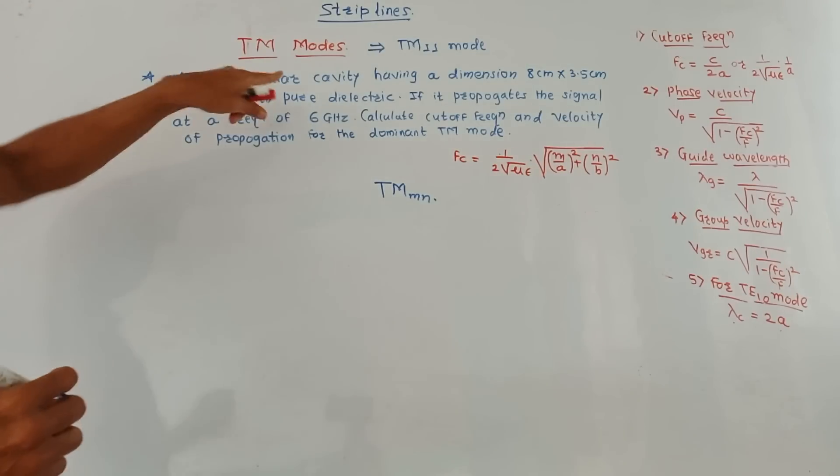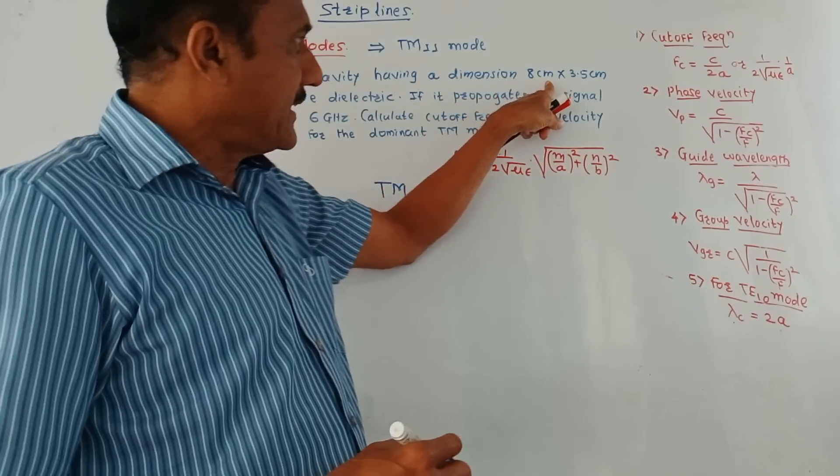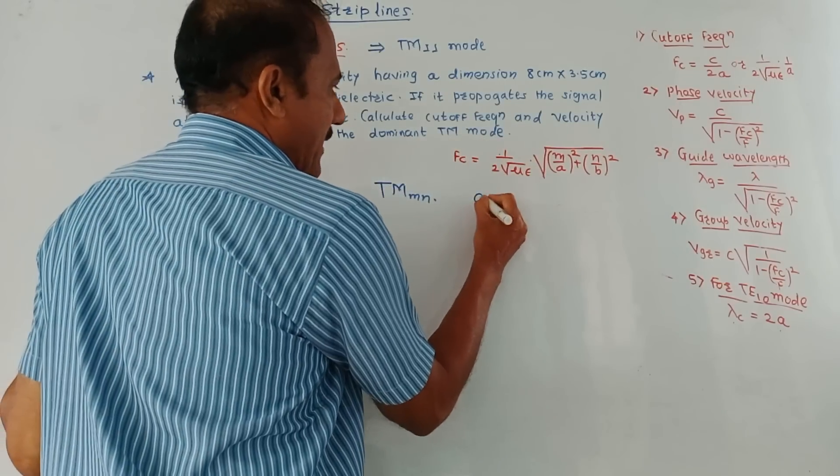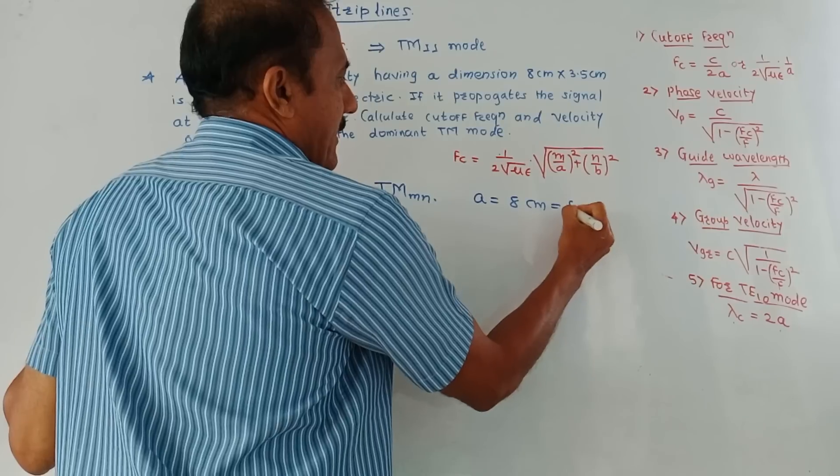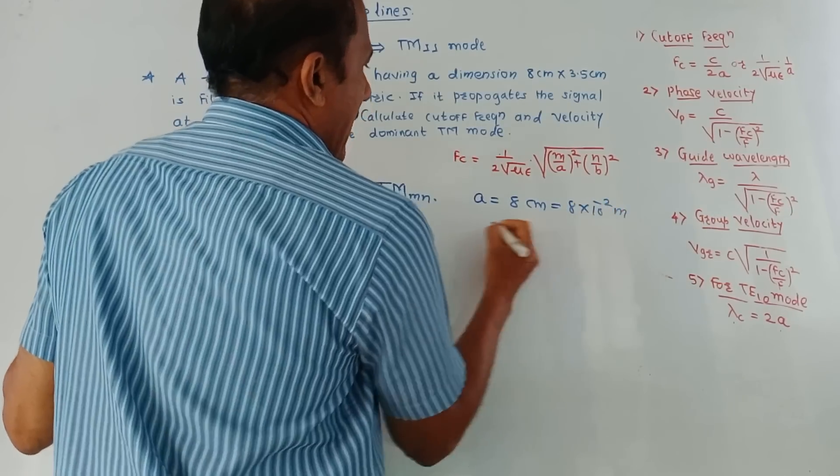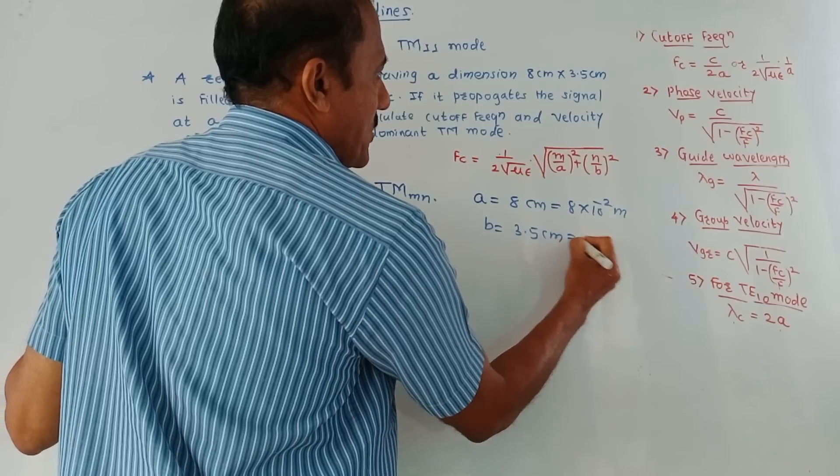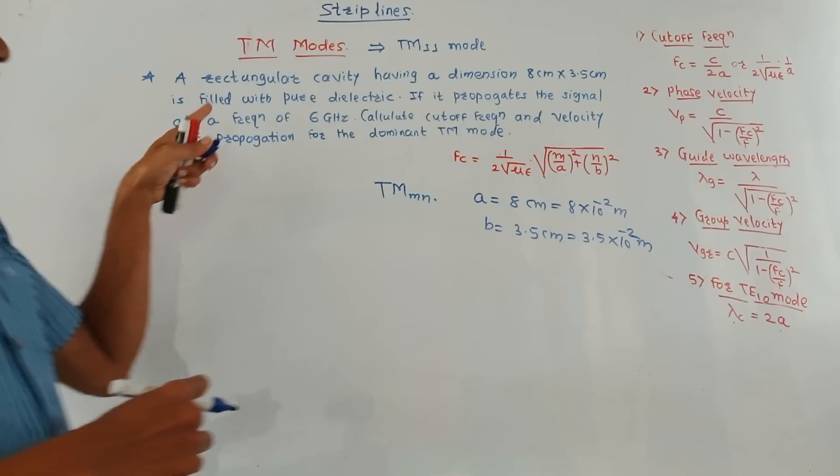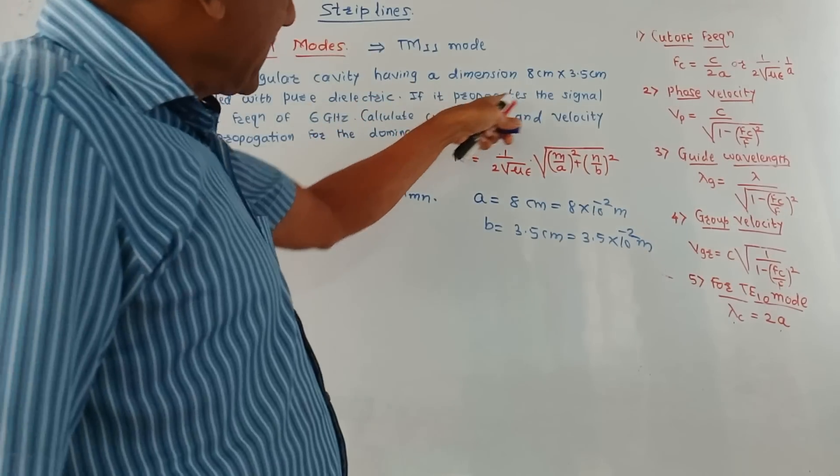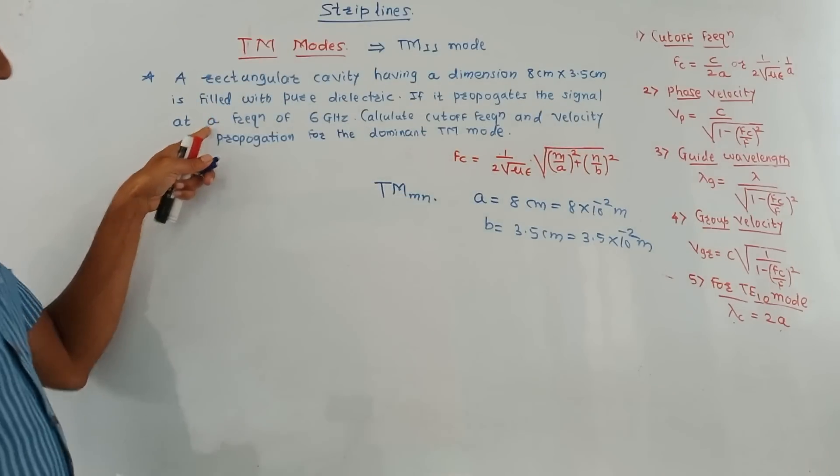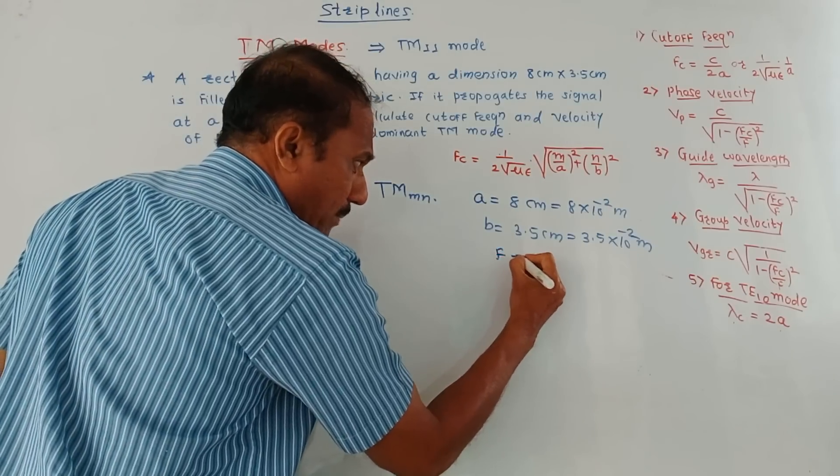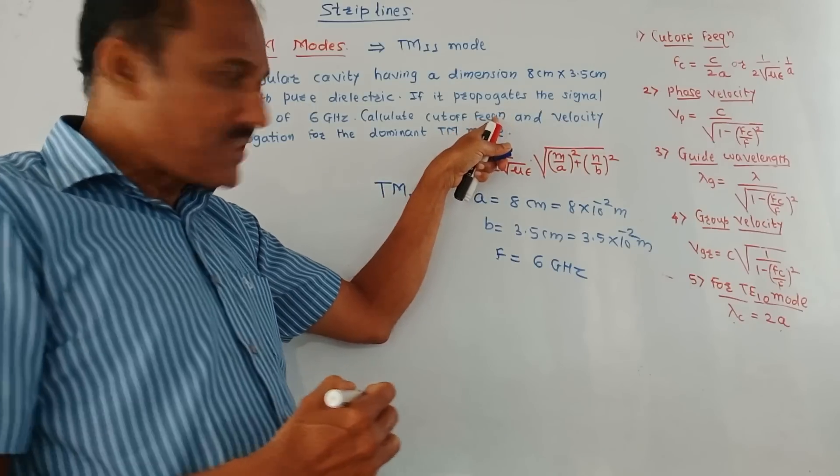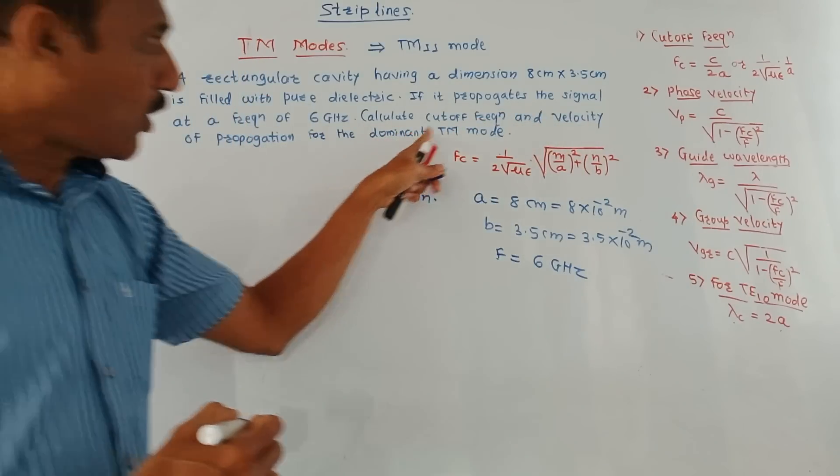Now let us discuss one numerical. A rectangular cavity having dimensions 8 centimeter into 3.5 centimeter. We know that these are the dimensions related to A and B. So A is 8 centimeters, that is 8 into 10 raised to minus 2 meters, and B equals 3.5 centimeters, which is 3.5 into 10 raised to minus 2 meters. These are the dimensions of given rectangular waveguide filled with pure dielectric. If the signal propagates at a frequency of 6 gigahertz, so this F, that is operating frequency, is given as 6 gigahertz.